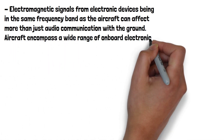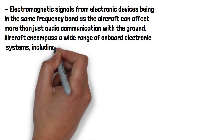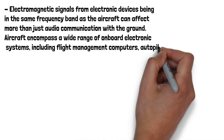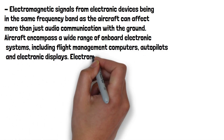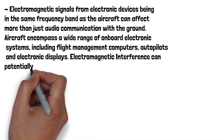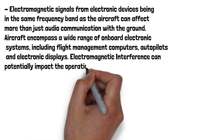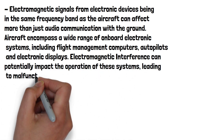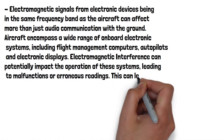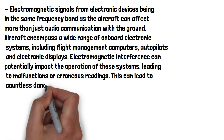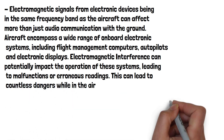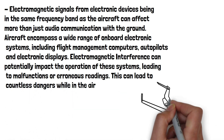Aircraft encompass a wide range of onboard electronic systems including flight management computers, autopilots, and electronic displays. Electromagnetic interference can potentially impact the operation of these systems, leading to malfunctions or erroneous readings. This can lead to countless dangers while in the air.